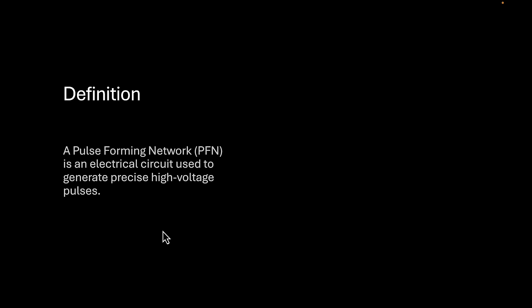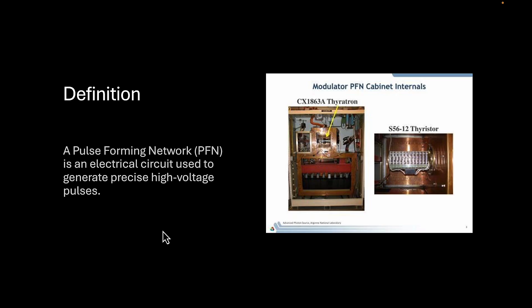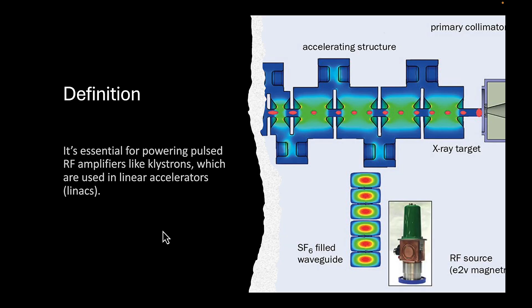A pulse-forming network is an electrical circuit used to generate precise high-voltage pulses. It's mainly used in thyratrons, which are the main component of linear accelerators. It's essential for powering pulsed radiofrequency amplifiers like klystrons, which are used in linac systems. As we can see here, the PFN is used to increase the radiofrequency and accelerate the particles moving in linac devices.